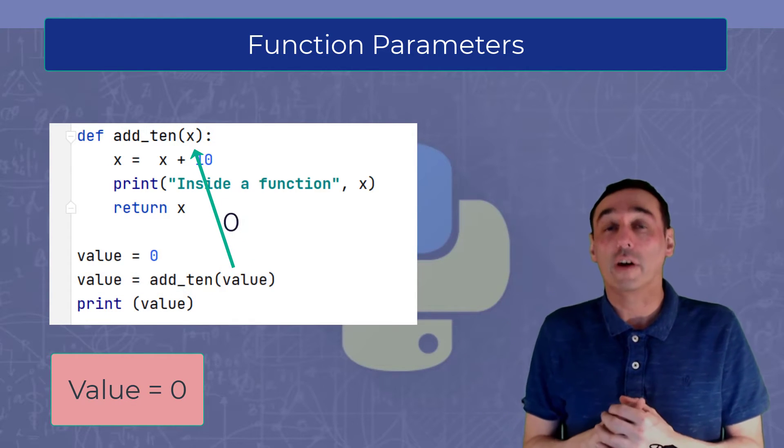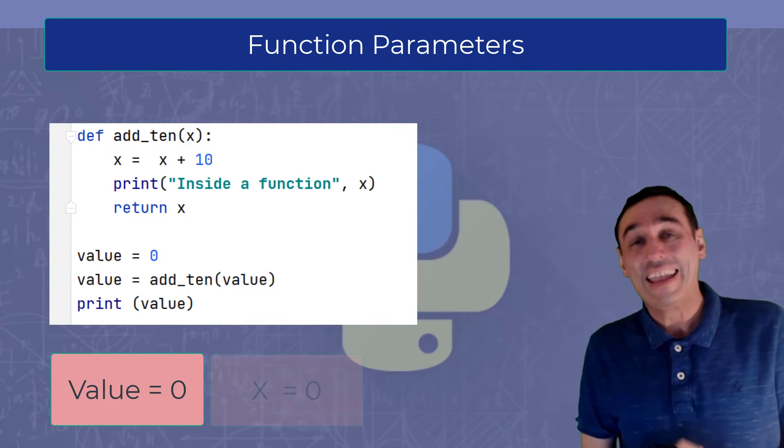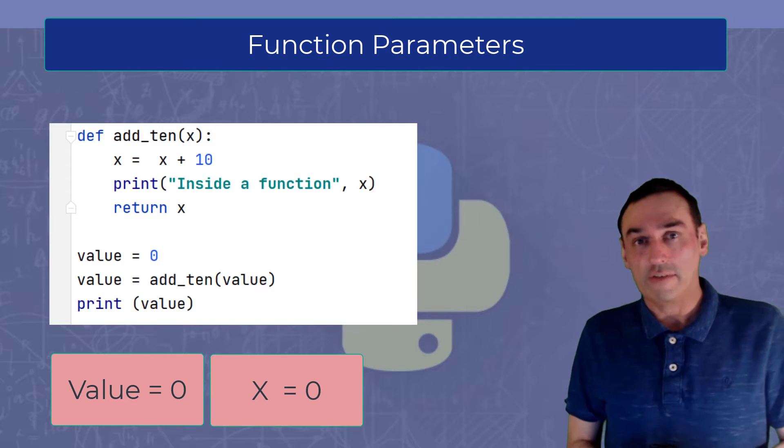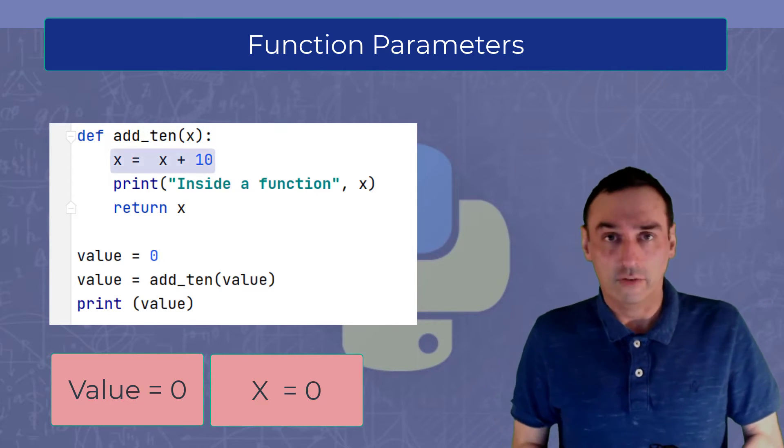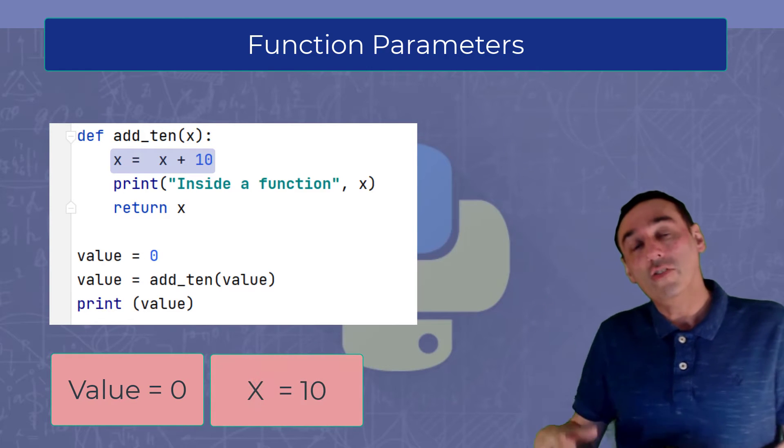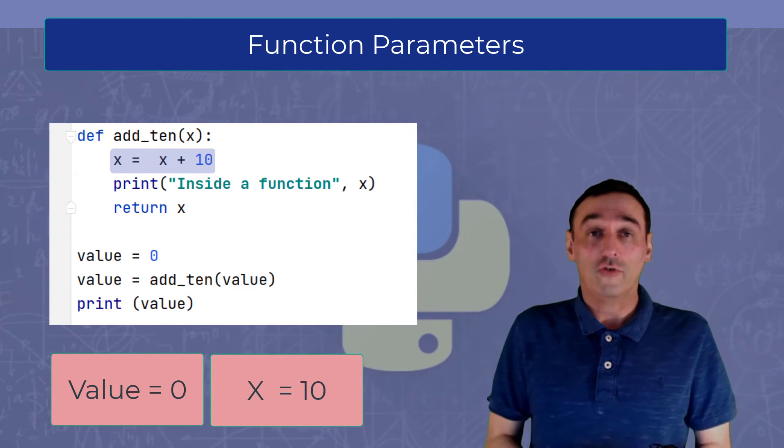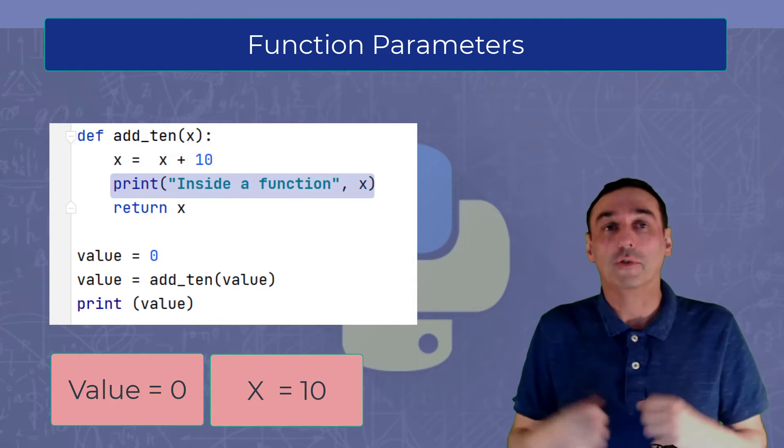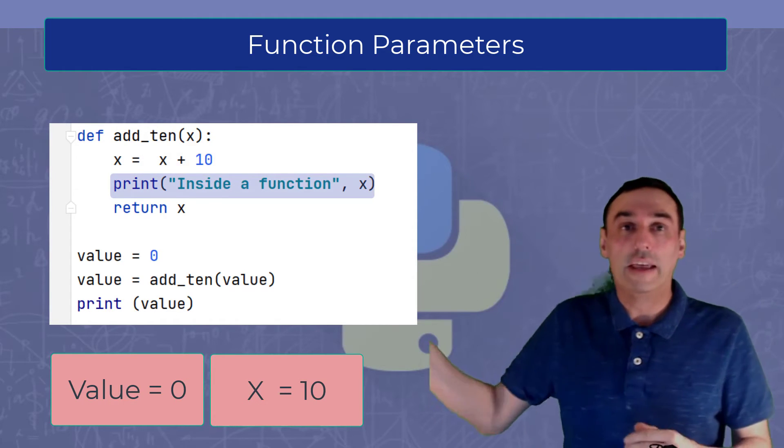So x now becomes 0. We then take x which is 0 and we add 10 to it. As you can see, we will then print the contents of x to the screen using print. Inside a function, remember it's a local variable, so it will print the contents of 10 to the screen.